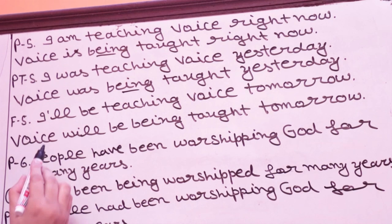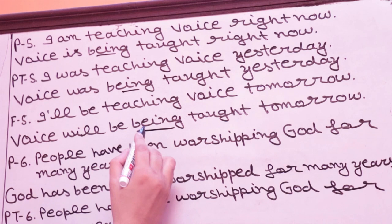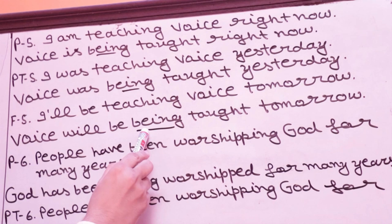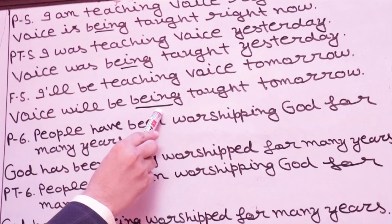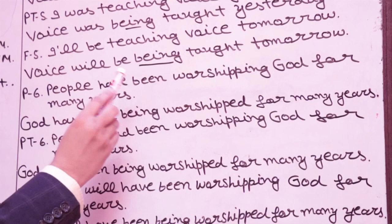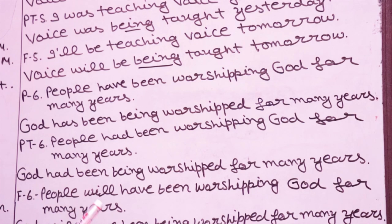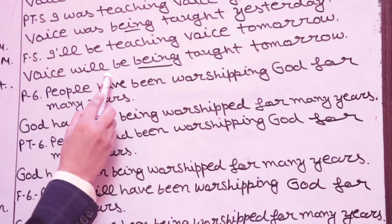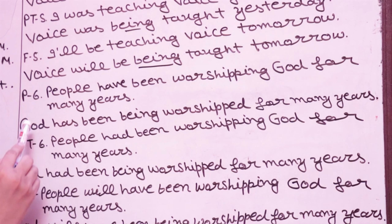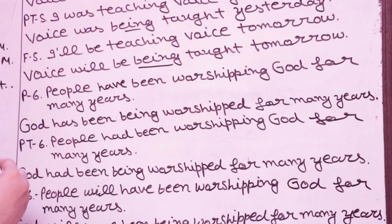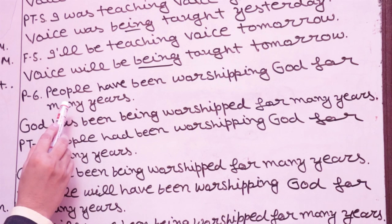F5 — future continuous: 'I will be teaching voice tomorrow' → 'Voice will be being taught tomorrow.' Note: Indian grammarians mostly don't use this form, but it is given in Michael Swan's Oxford book 'English in Use for International Students.' He is one of the greatest grammarians of the 21st century. If it's not in your syllabus, you can ignore it. The same British rule applies to present perfect continuous, past perfect continuous, and future perfect continuous.